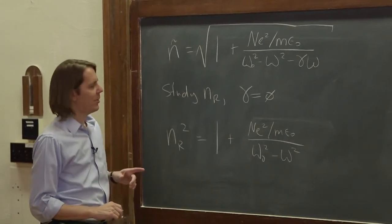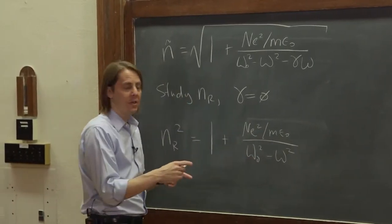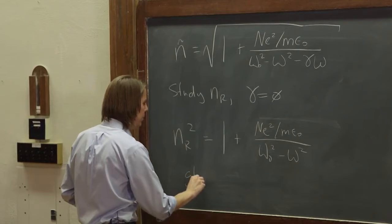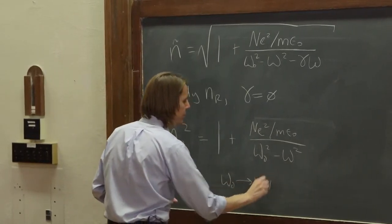So if we have that, now we can think about what does that look like. Omega naught, remember, we showed was in the UV. So for something like glass, omega naught was outside of the visible range in the UV.